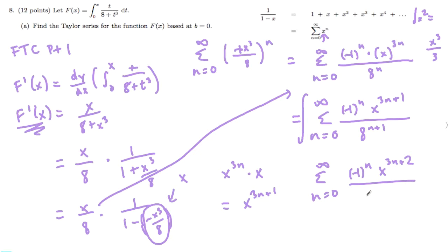Plus 2 all over 3 to the n plus 2 times 8 to the n plus 1. And this is your final answer.